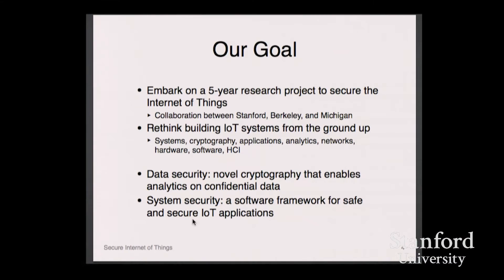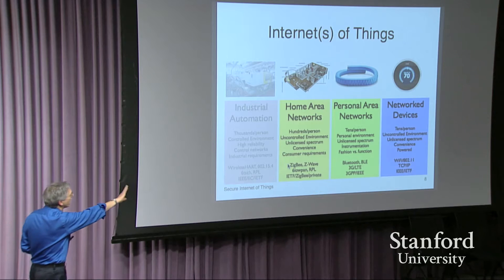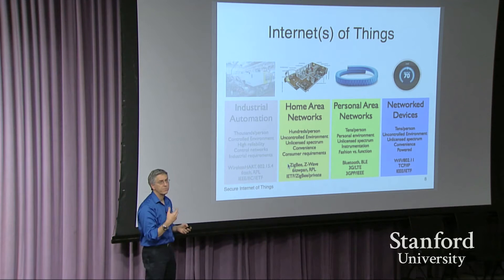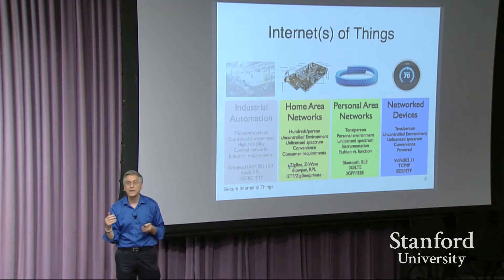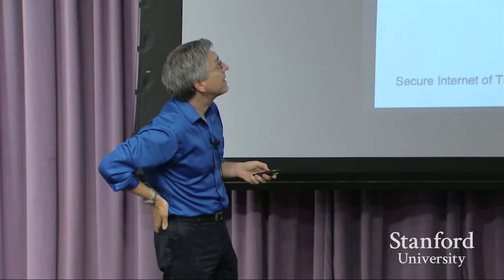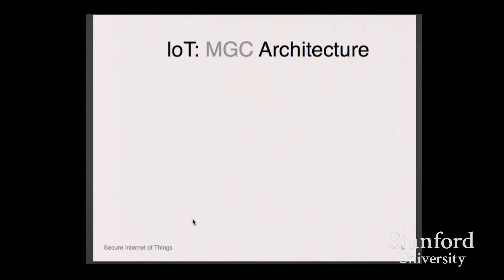So we're starting up a new research program, hopefully with a five-year horizon, where we hope to create essentially an underlying architecture of how to think about the Internet of Things that can give you security through the home, personal area, and network devices within your home. That's kind of the space we're going to be looking at initially. We think about the Internet of Things as being an MGC architecture.